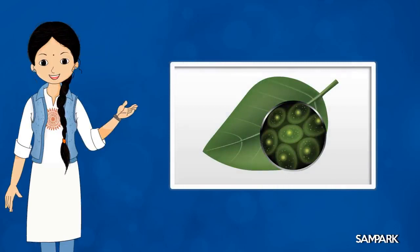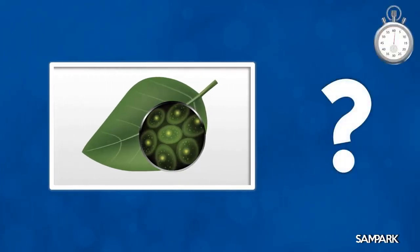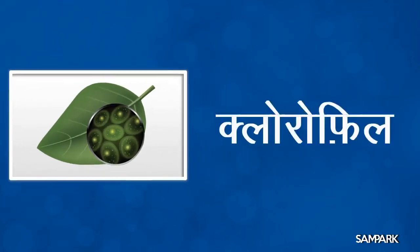बच्चों, ये है एक हरी पत्ती। इसमें दिखाया गया है पत्तियों का हरा वर्णक जो सूर्य के प्रकाश से ऊर्जा प्राप्त करने में पत्ती की सहायता करता है। इसे क्या कहते हैं? इसे क्लोरोफिल कहते हैं बच्चों।